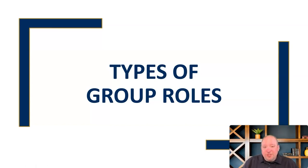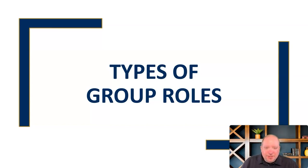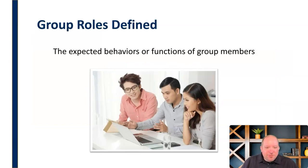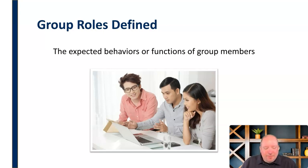We have different types of group roles — different functions and personality types and things that people do in groups, different roles that people play. It's important that we identify what these are and discuss them and how we can best use those to the benefit of the group as opposed to the detriment of that group. Roles are simply the expected behaviors or functions of group members — the way that we expect them to behave, not necessarily in explicit rules. These are more personality types or functions in the inner workings of the group, more unwritten behaviors and rules that people perform.